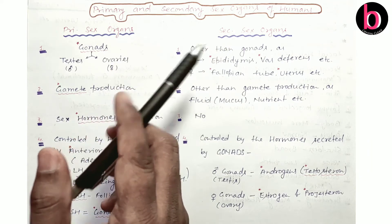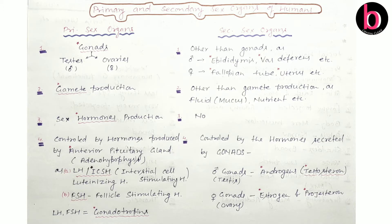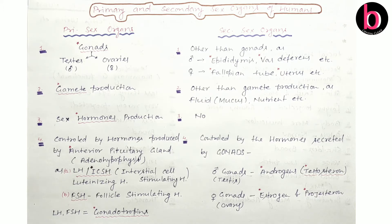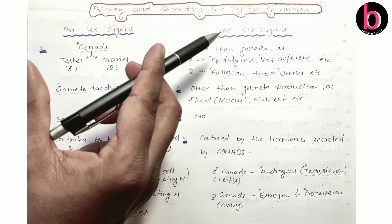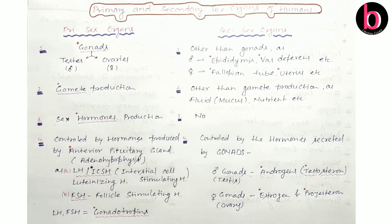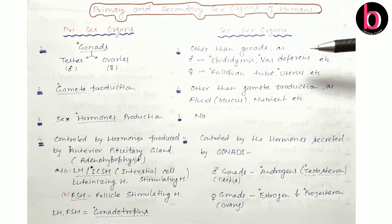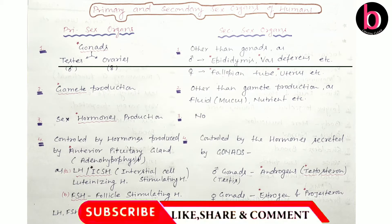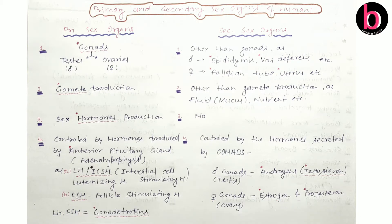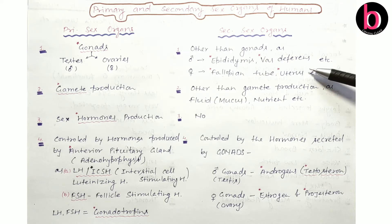In the case of secondary sex organs, all other organs that are related with sex but are not gonads are considered secondary sex organs. For example, in males: epididymis, vas deferens, urethra, and a number of glands like prostate glands. For females: fallopian tube, uterus, vagina, and cervix — all these are considered secondary sex organs.